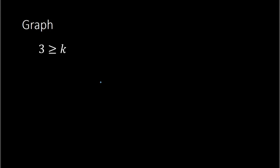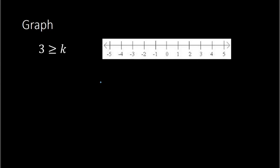Here is kind of a trick question. We have 3 is greater than or equal to k and you're told to graph this. When you graph, you're going to look at the variable. The variable k — if I read this with k first, then the 3 next — k is smaller than or equal to 3. I just changed the order. k comes first, 3 comes second, and the mouth still faces the 3. So in reality, this expression is k is less than or equal to 3.